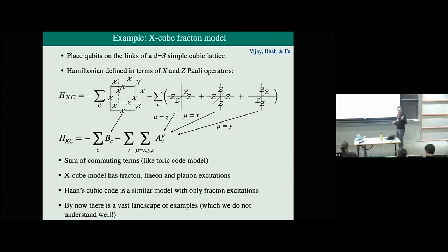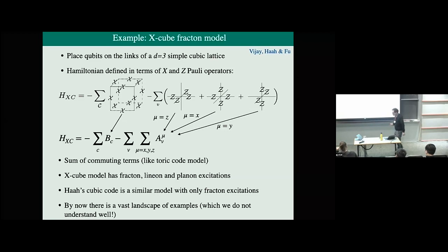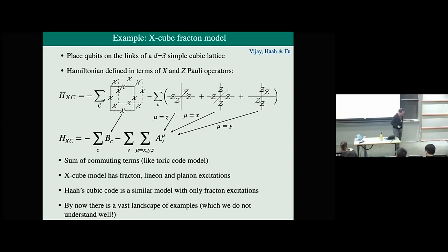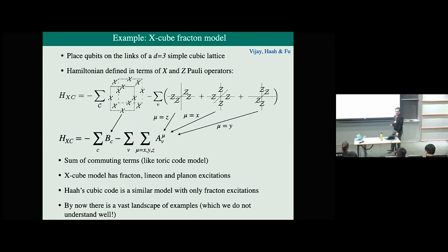This model has all three types of excitations: fracton excitations, lineon excitations, and planon excitations. There's another model called Haas's cubic code, or just the cubic code, which has a somewhat more complicated Hamiltonian but also in the same spirit. In that model, all non-trivial excitations are fractons — there are no lineon and planon excitations. By now there's actually a vast landscape of examples, many models like these, some quite a bit more complicated.